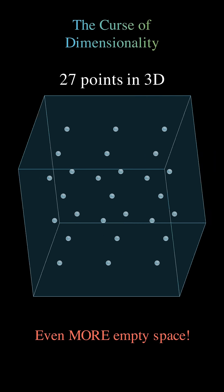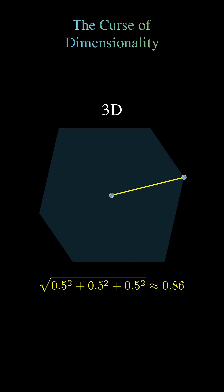For instance, in a 2D square with a side length of 1, the distance from the center to corner is the square root of 0.5² plus 0.5², which approximates to 0.7. But in 3D, the same distance equals 0.86.